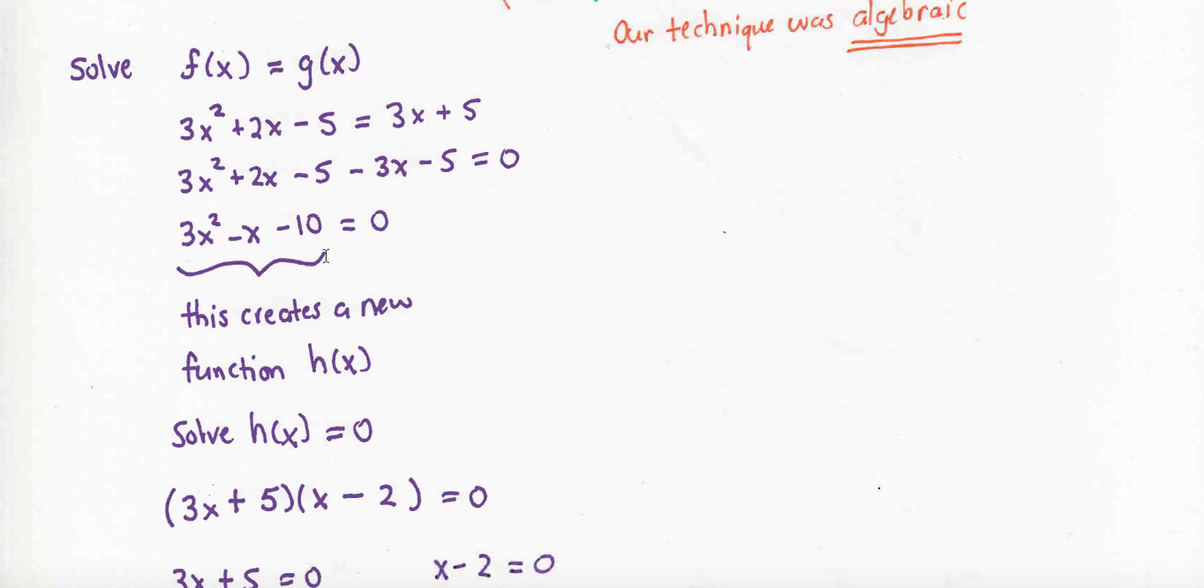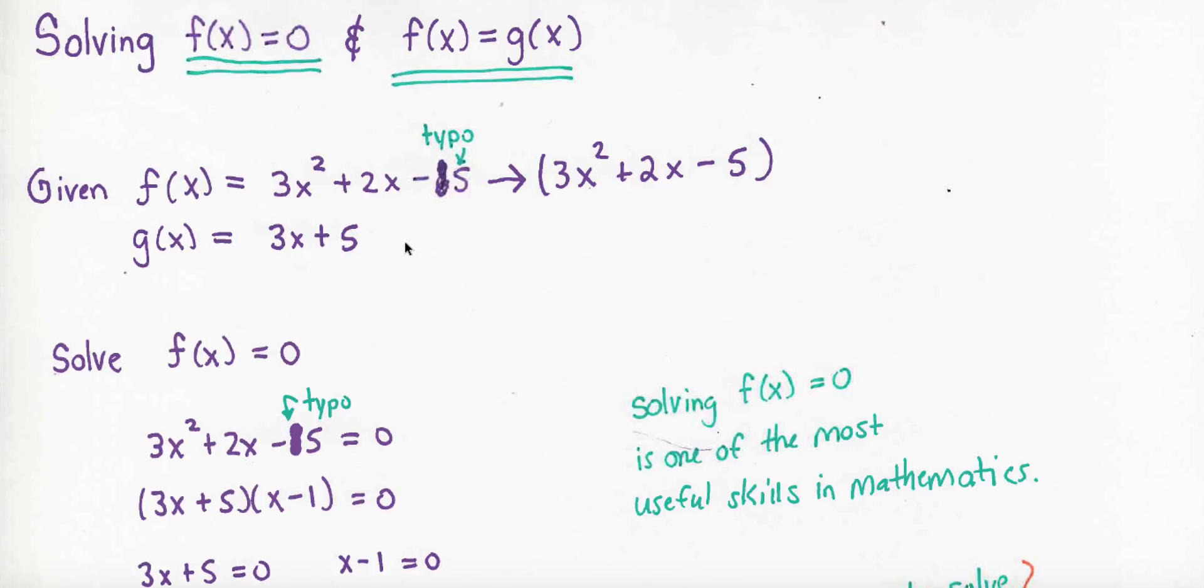So what we've done here is we've created a new function, 3x squared minus x minus 10. We'll call that h of x and equals 0. So we're right back to the first question. Solve a function equal to 0.